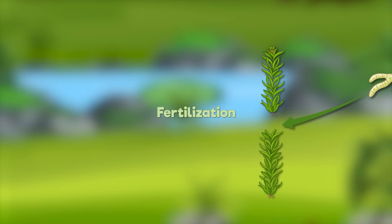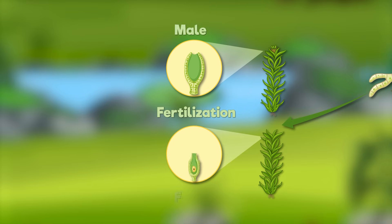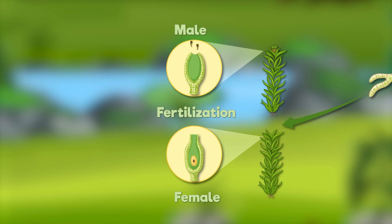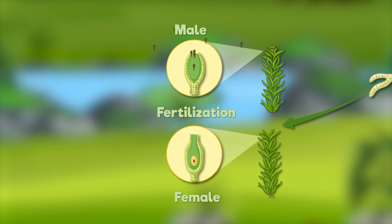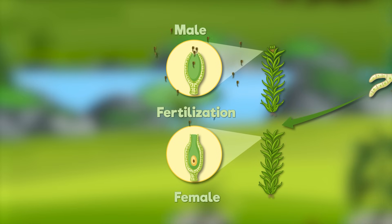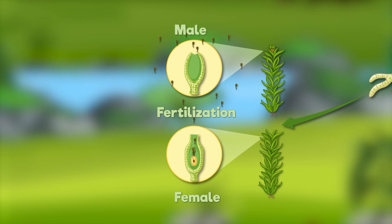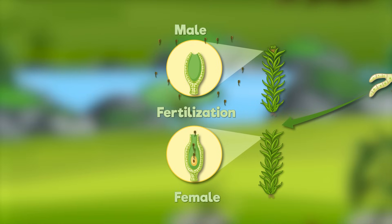Step 4: Fertilization. Moss plants come in two types, male and female. The male moss produces sperm, and the female moss produces eggs. When there is water, like rain or dew, the sperm swims to the egg, and they join together in a process called fertilization. This creates a new part of the moss plant.